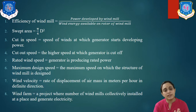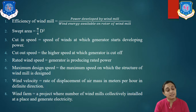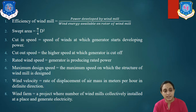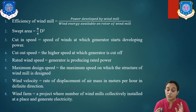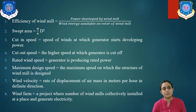Rated wind speed is the speed of wind at which the generator is producing its rated or required power. Maximum design speed is the maximum speed of wind at which the structure of the windmill is designed — it defines up to what speed and at what speed it will generate electricity.